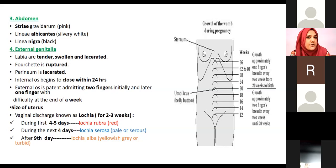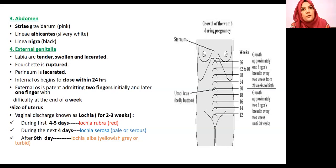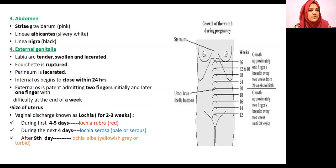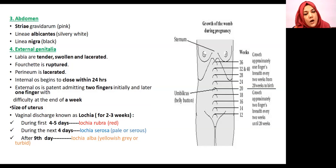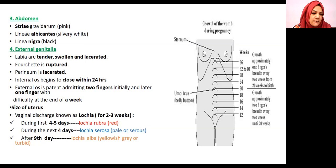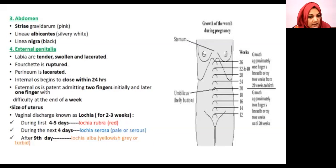Internal os within 24 hours and external os post-delivery allow two fingers to be admitted easily; after a week only a single finger can be admitted with difficulty, and within a week it is closed. The uterus returns to its normal size in two weeks and normal shape in six to eight weeks. A lochia discharge is present for two to three weeks, and its color helps determine if it is normal or infected.